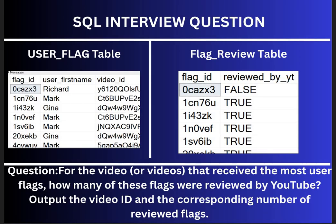As you can see on my screen, we have two input tables in this scenario. On the left side we have the user flag table and on the right side we have the flag review table. Our task here is: for the videos that receive the most user flags, how many of those flags were reviewed by YouTube? Let me head over to Excel to give you a glimpse of both the input tables and also the expected output.